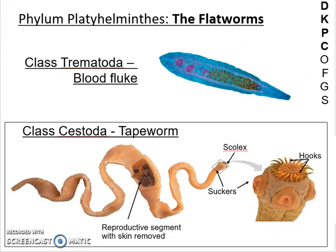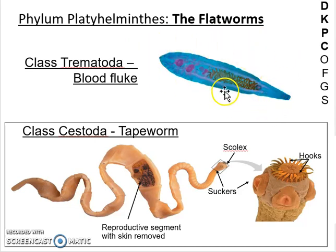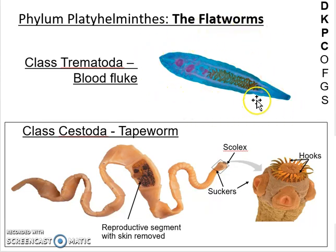Looking at examples of flatworms within domain Eukarya, kingdom Animalia, phylum Platyhelminthes: the trematodes are flat, with a single body segment. The ones parasitic in humans tend to live in the bile ducts — the tube running from the liver to the intestines. They absorb some digested food through their skin and take in some through a small mouth opening, with food penetrating throughout their body. You can also see that trematodes have both male and female reproductive organs — testes and ovaries — visible within them.